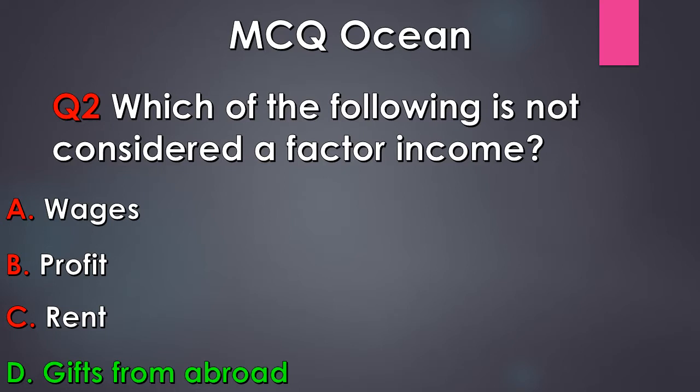The correct answer is Option D, Gifts from abroad. Wages is a factor income — that is the factor income of labor. Profit is the factor income of the entrepreneur. Rent is the factor income of land. So gifts from abroad is not a factor income; it is a transfer payment.